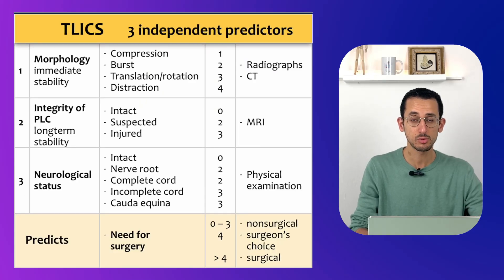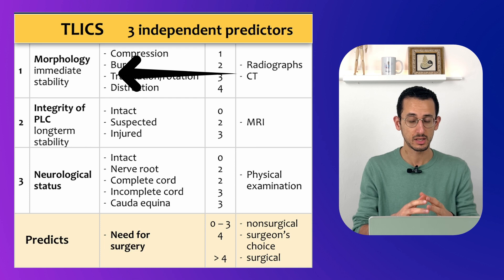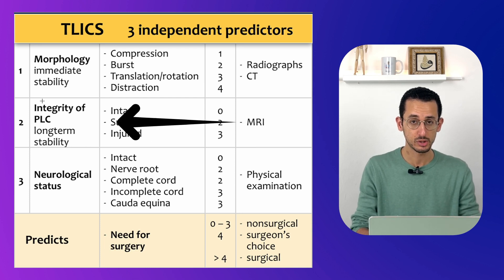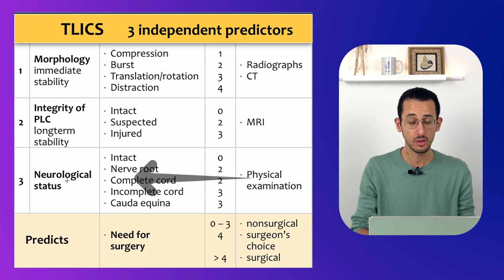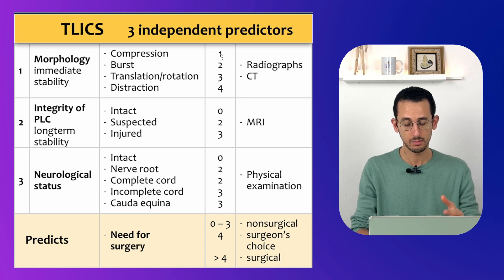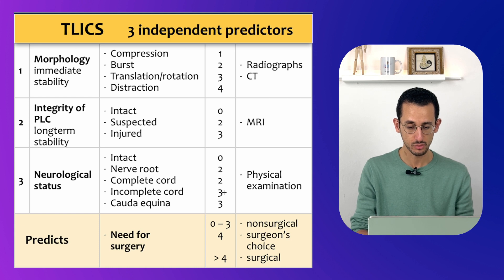The TELX classification system relied on three independent predictors. One is the morphology, which is basically the shape of that fracture. Second is the integrity of the posterior ligamentous complex. And third is the neurological status of the patient. The morphology can be divided into four types and you give a score out of four. Integrity is again from zero to three, and the neurological status from zero to three.